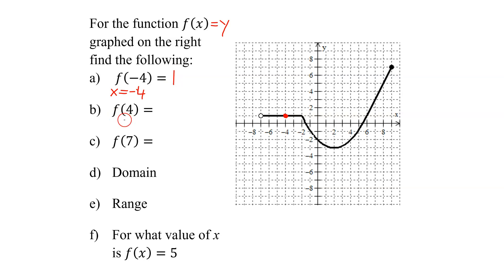Part b, we know that x equals positive 4. Find the point on the graph where x equals positive 4. So start at the origin — 1, 2, 3, 4 to the right. Is there a point on the graph? Yes, right here. And what is its y value? Negative 2. So f of positive 4 is negative 2.